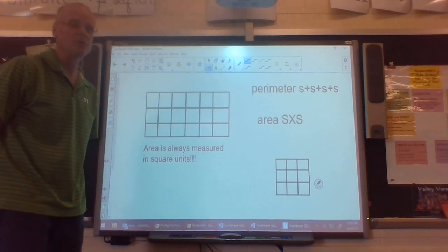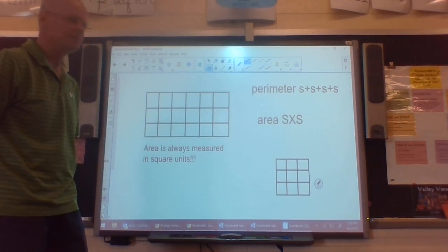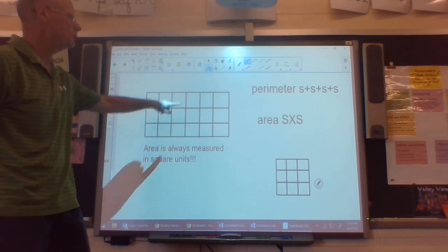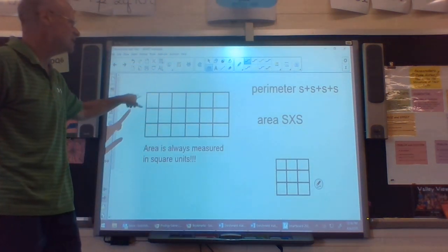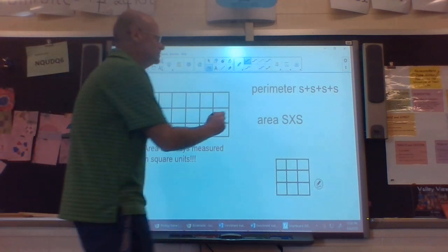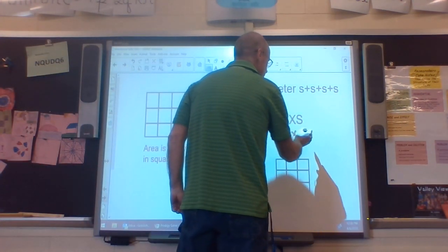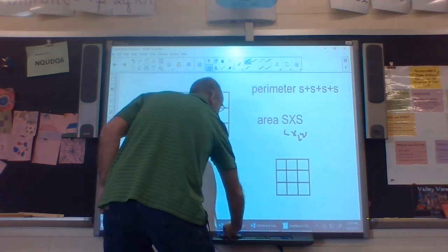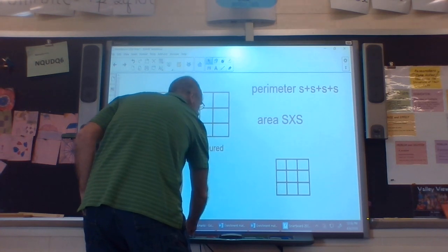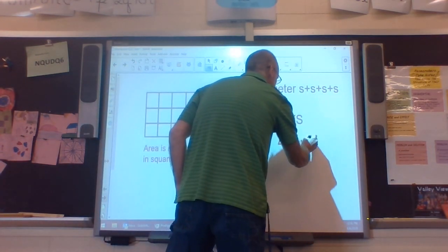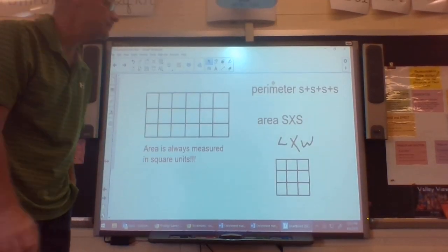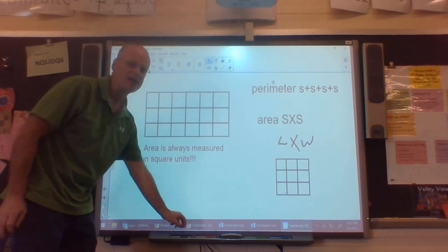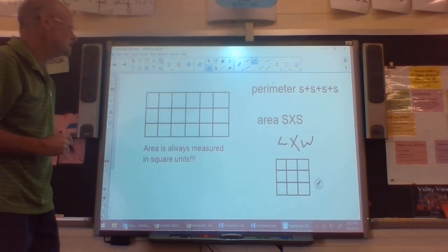Now in this, we're going to combine both of our last two lessons. I gave you a shape here, and it's cut up into squares for you. What I'd like you to do is figure out both the perimeter, which is side plus side plus side plus side, and the area, which is side times side or length times width is the way we usually teach it.